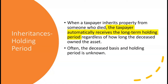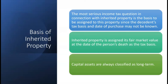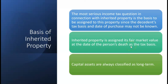You automatically get the long-term capital gain even if you, the one who inherited the property, only held the asset for a few weeks. The most serious income tax question in connection with inherited property is the basis to be assigned, since the decedent's tax basis and date of purchase may not be known and aren't even relevant — because inherited property is assigned its fair market value at the date of the person's death. That becomes your tax basis.